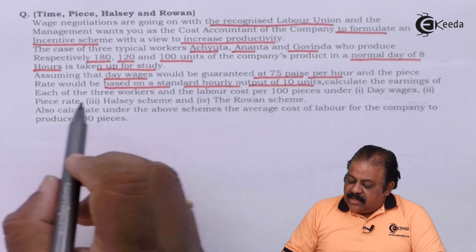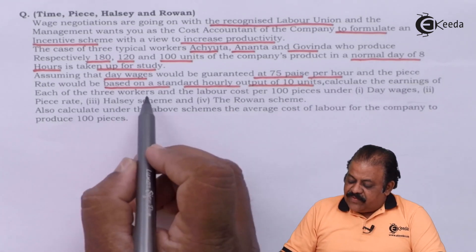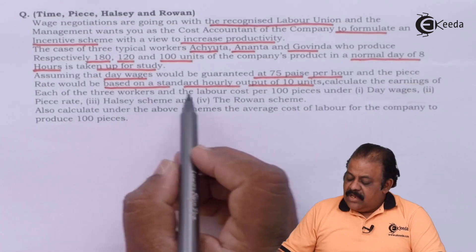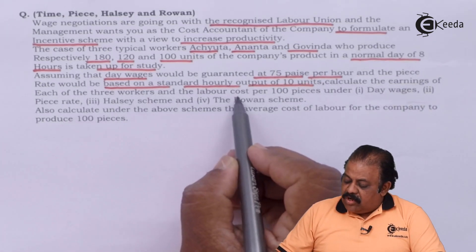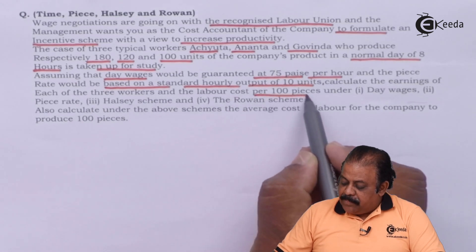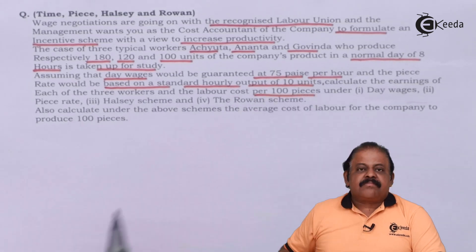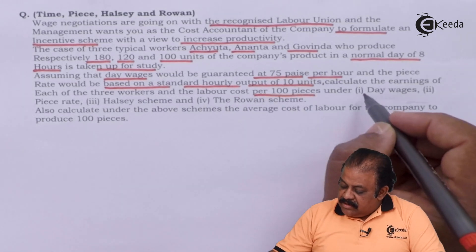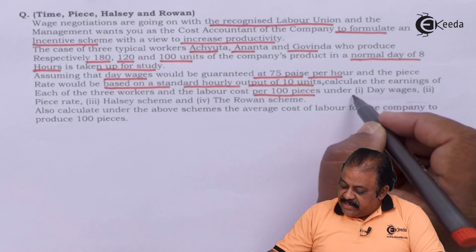Calculate the earnings of each of the three workers and the labor cost per 100 pieces under day wages.